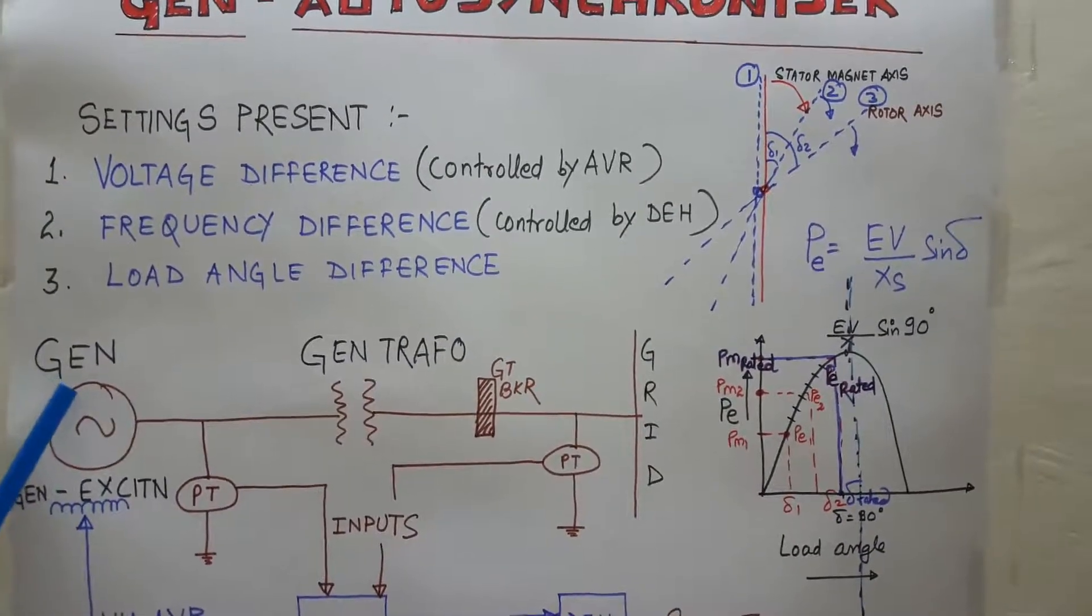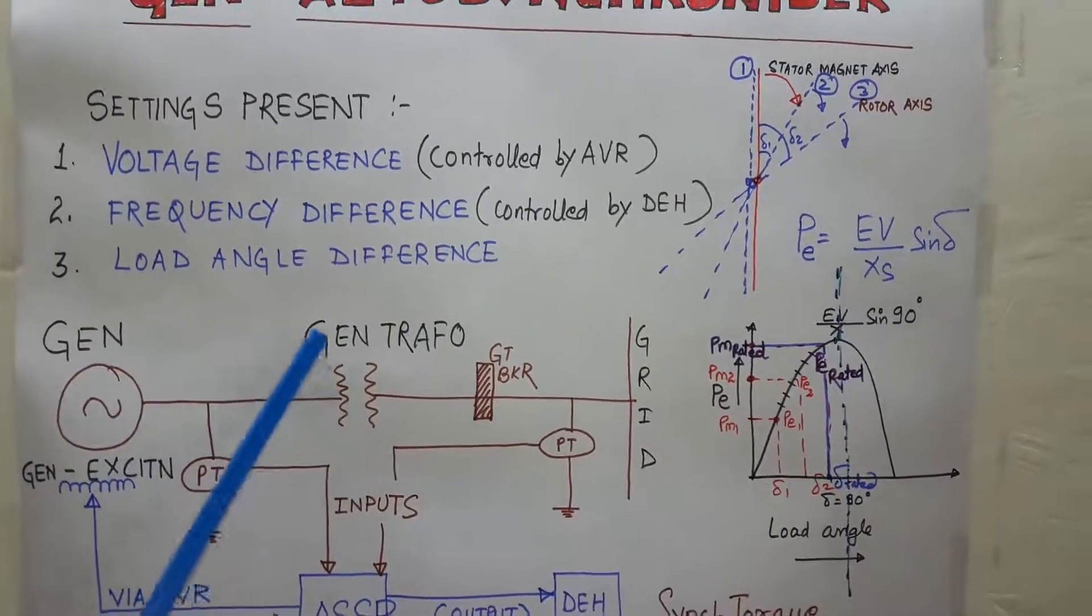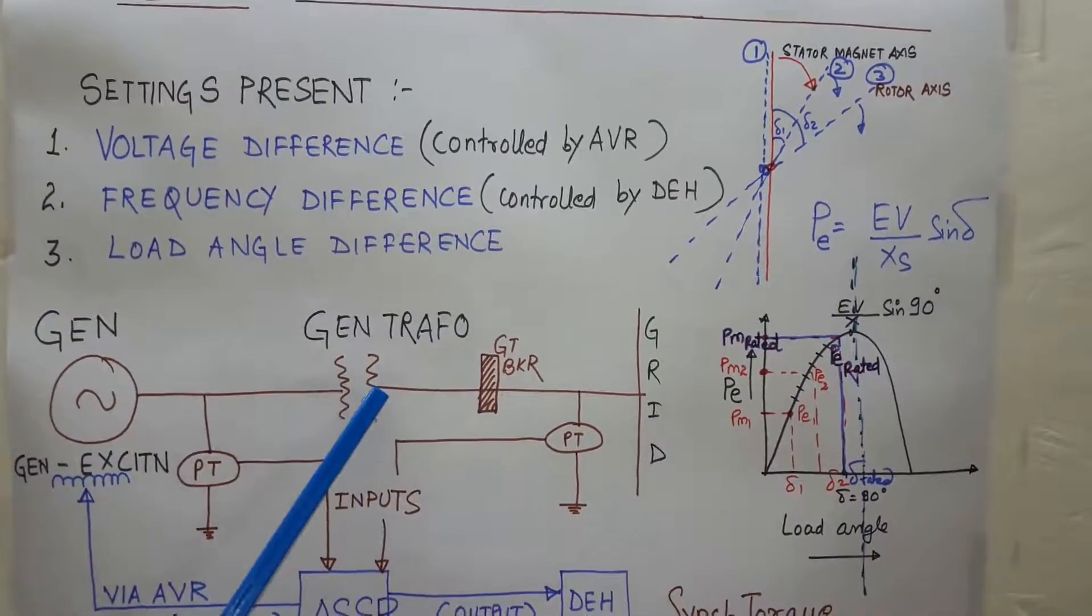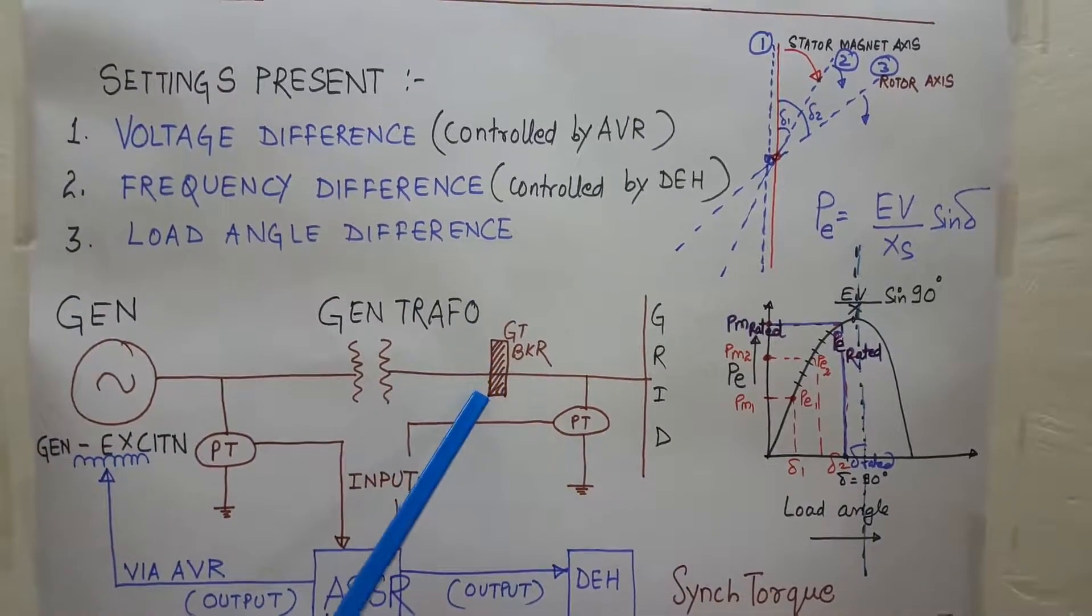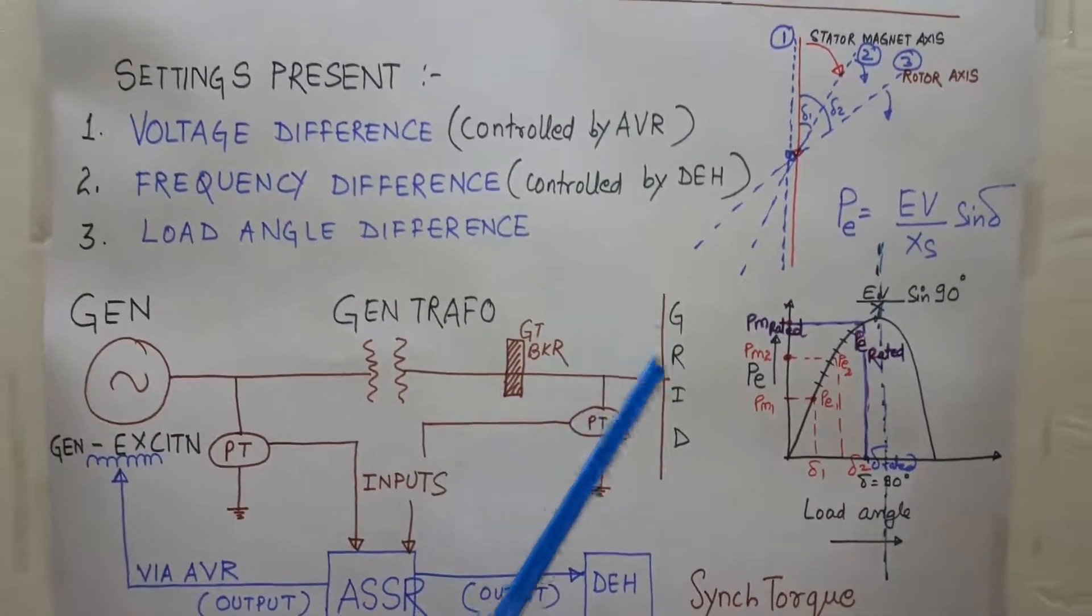This is generator. From generator the power is flowing into the generator transformer. From generator transformer it is going to the generator transformer circuit breaker and after that the transmission line is going to the grid.